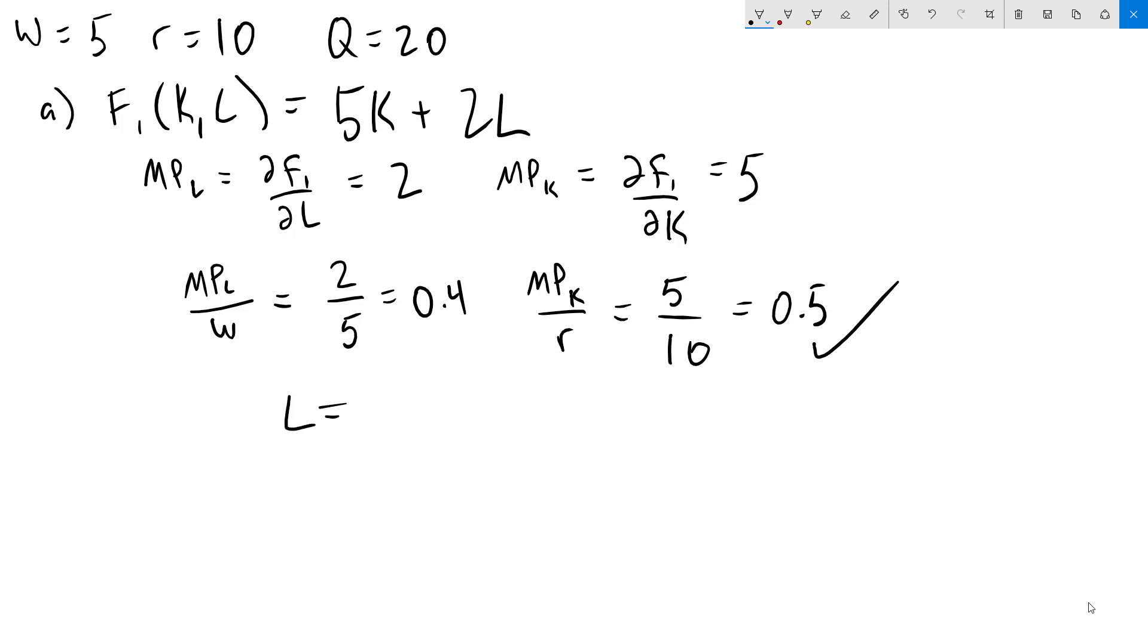We're only going to use capital in our production. That tells us that L equals 0. We can finish this off by figuring out how much capital we need, and we can use the production function to do that. We know that our target output is 20, so 5k plus 2L needs to be 20, but of course we know that L is 0, so this goes away. Divide both sides by 5, we get k equals 4.